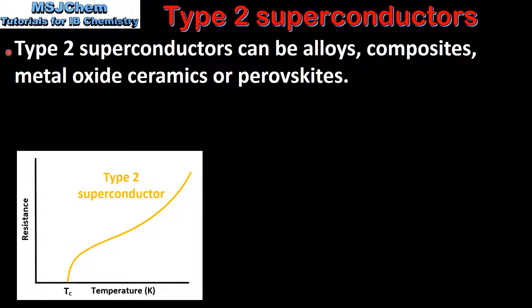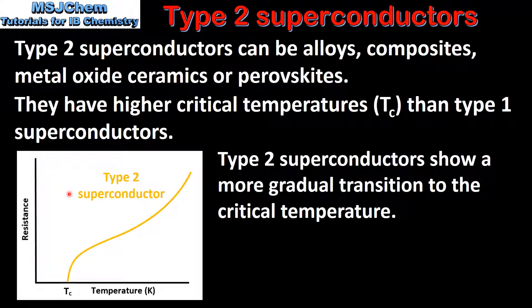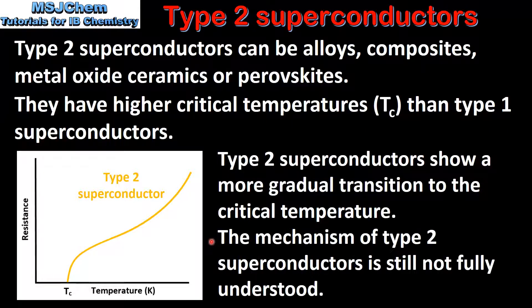Next we look at type 2 superconductors. Type 2 superconductors can be alloys, composites, metal oxide ceramics, or perovskites. Type 2 superconductors have higher critical temperatures than type 1 superconductors. From this graph we can see that type 2 superconductors show a more gradual transition to the critical temperature. Finally, the mechanism of type 2 superconductors is still not fully understood.